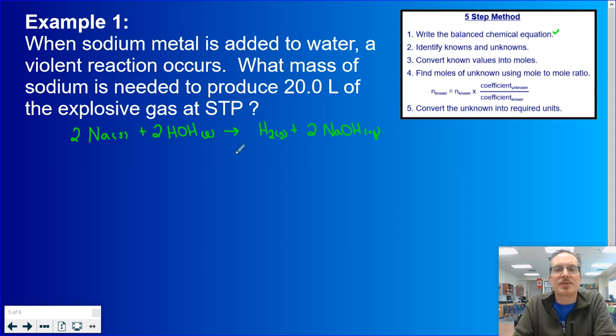Next we're going to write our knowns and unknowns underneath the appropriate categories. So we are trying to figure out what mass of sodium. The moment we know we're finding mass, we can look up the molar mass, which is 22.99 grams per mole. And we're going to produce 20 liters of this gas. And our gas, of course, would be hydrogen gas. So that's going to be our volume. And it says STP. So I can take those conditions out of my data booklet. My pressure is 101.325 kilopascals and my temperature is 273.15 kelvins.